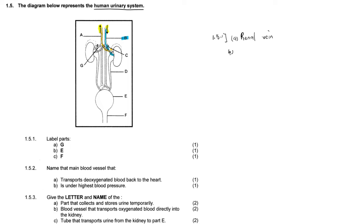Now we have to label part E. Part E is something round, like a sac-like layer. Tracing it back, this is coming from the kidney. Whatever comes out from the kidney and moves down will be stored here at E. These arrows show something coming away from the kidney and moving into part E. What moves away from the kidney into this part below? It is urine, and urine is stored at the bladder.